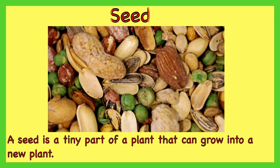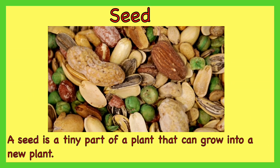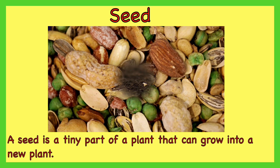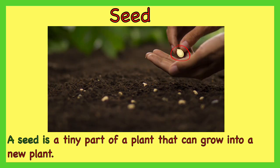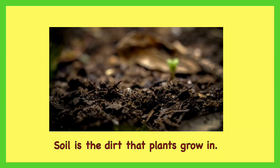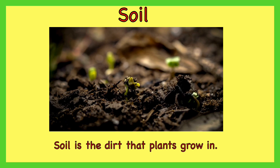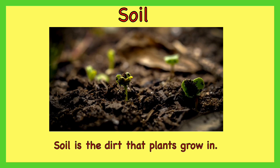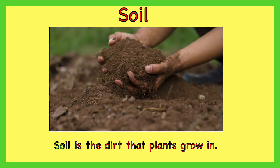Seed. A seed is a tiny part of a plant that can grow into a new plant. Soil. Soil is the dirt that plants grow in.